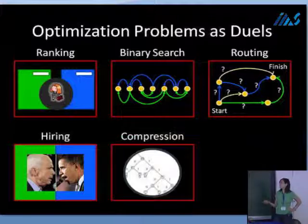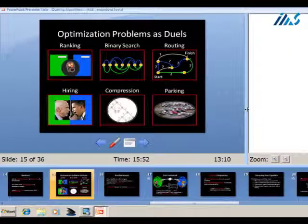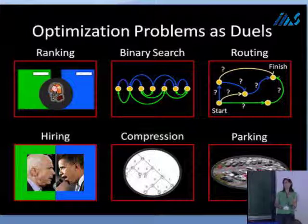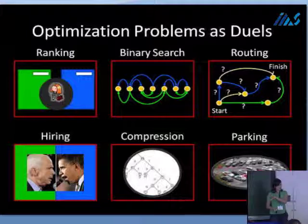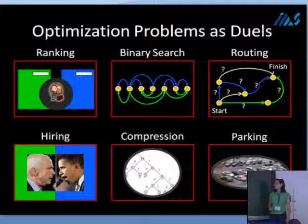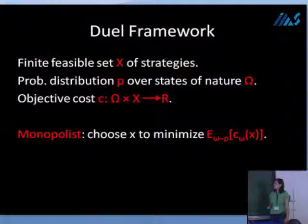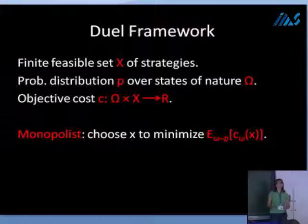My favorite example here is the parking problem: you're driving into a parking garage and there's an annoying guy in front of you who will steal any spot he finds. You don't necessarily want to do the best possible search through the graph for an empty spot — you just want to jump ahead of the guy in front of you and hope you get to a spot before he does. This is another example of an optimization problem as a duel.